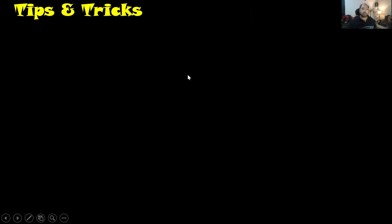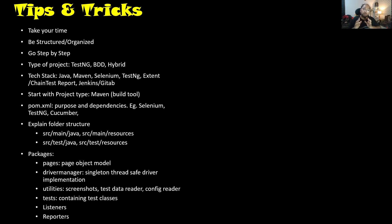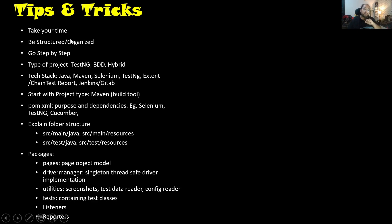So this is how a typical TestNG framework looks like. Now coming to the tips and tricks. When you start explaining the test automation framework, first of all, try to understand this is the entry point. Every interviewer expects that a candidate should be able to explain their automation framework. This opens up the door to further discussion, because here the interviewer gets confidence in the candidate. If he won't be able to explain, then the interviewer loses interest and you may not be selected. So as soon as you are asked to explain your test automation framework, take your time — you need to be structured and organized. People tend to start explaining one part, then jump to another part. Don't go in that fashion; follow a step-by-step approach.